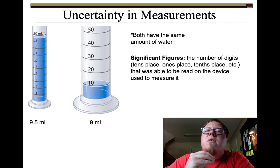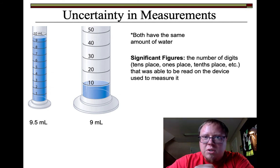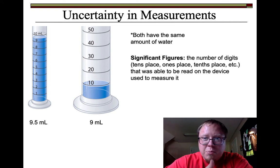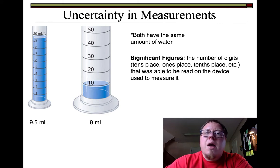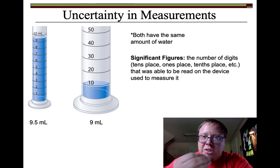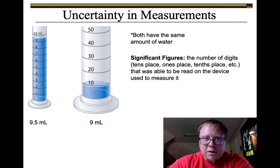So significant figures — what we're doing is counting the number of digits in the measurement. Digits meaning tens place, ones place, tenths place, or hundredths place, like 0.01, that we were able to read on the device used to measure. How many of those digits — those figures — will we actually be able to read on the device? That's what significant figures is.